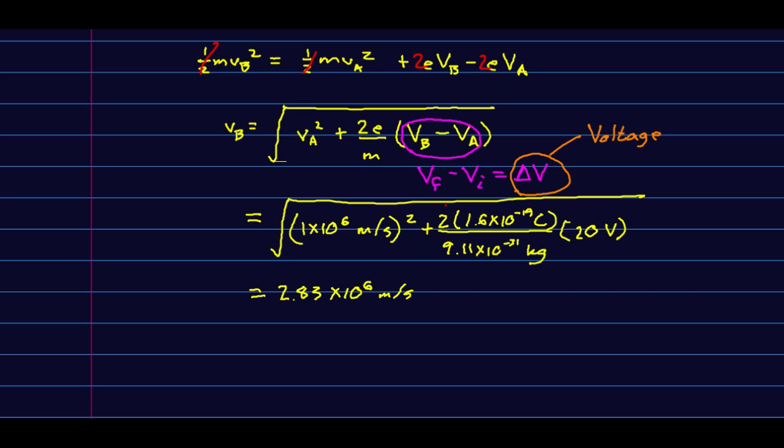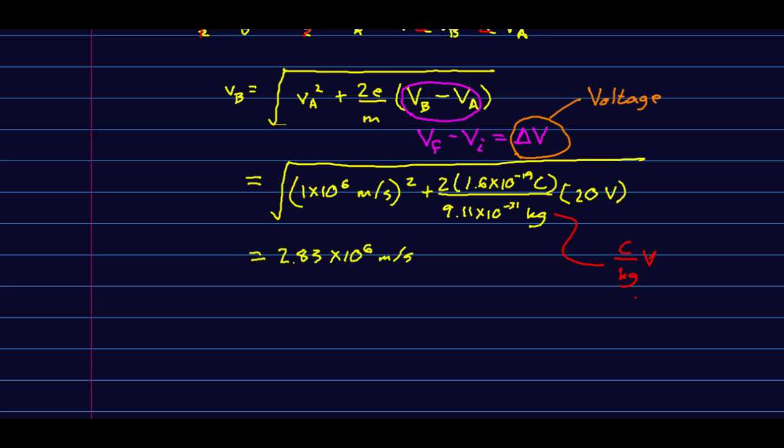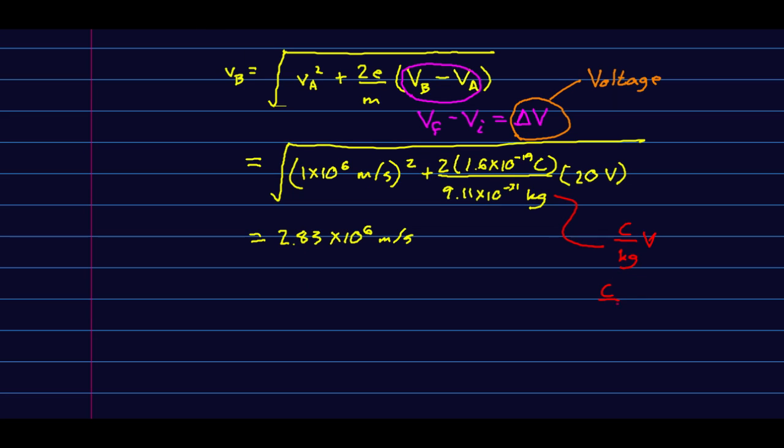This is fine. Meters squared per second squared, all square rooted. But let's check this part. We have coulombs per kilogram times volts, and a volt is a joule per coulomb. And so the coulombs cancel. And a joule is just a kilogram meter squared per second squared, and so that leaves us what we should have.